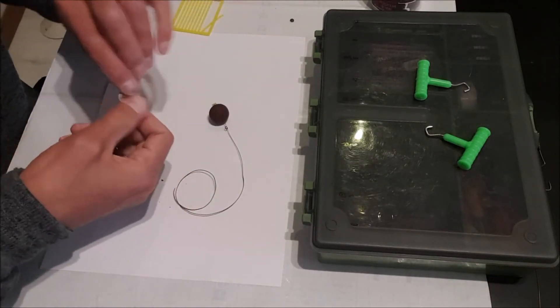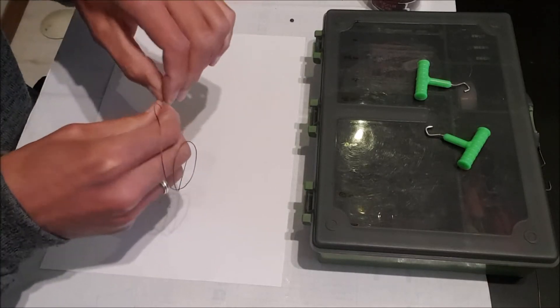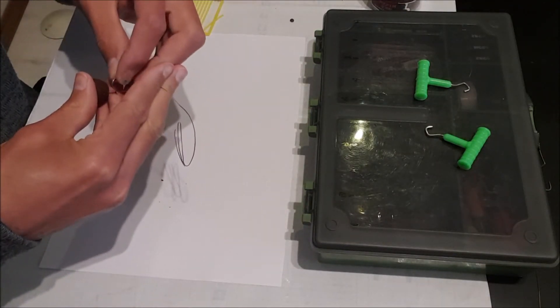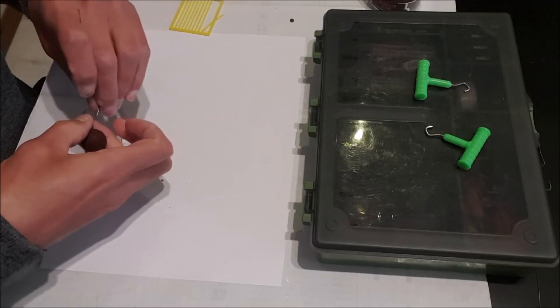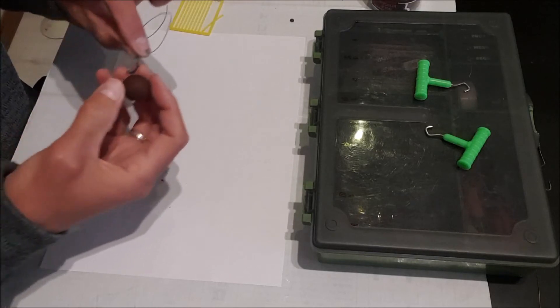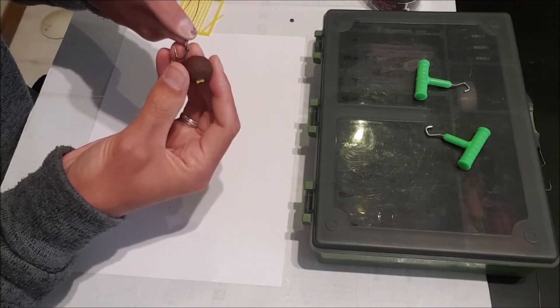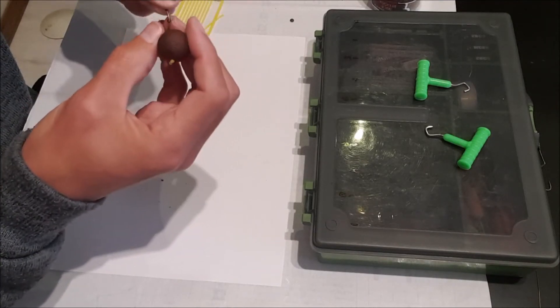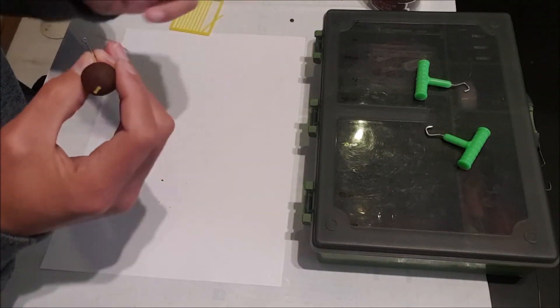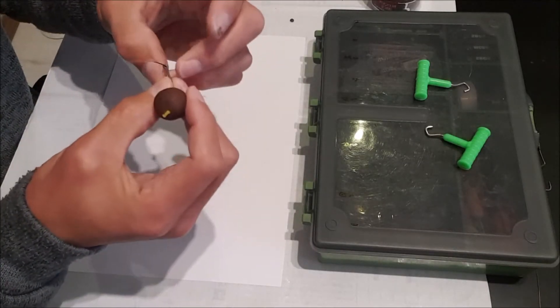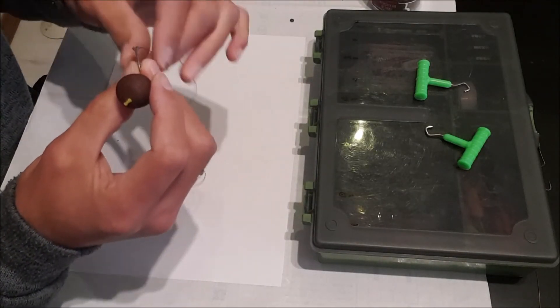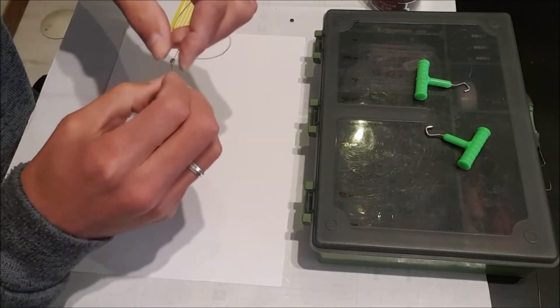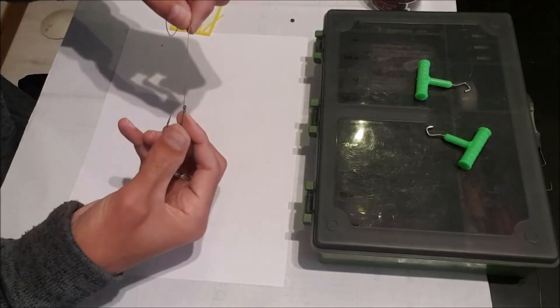Take a hook, pointing towards the boilie. Same position around the line of the barb, just short enough so the boilie can't hook itself on the hook. Tag end through the eye, up and around. Make sure it's straight and in line.